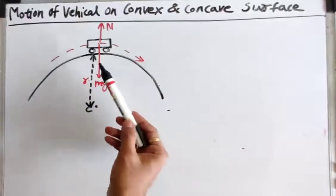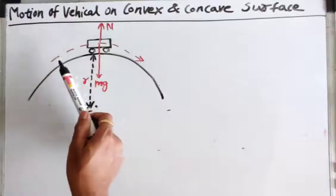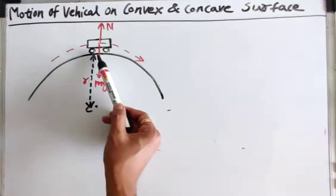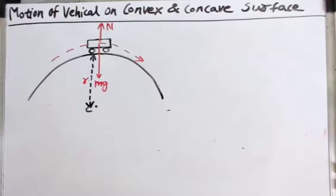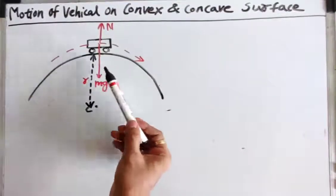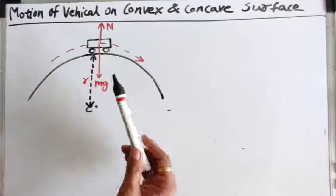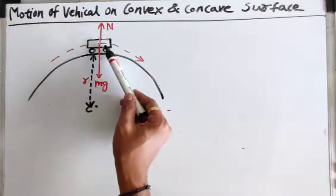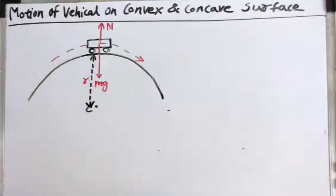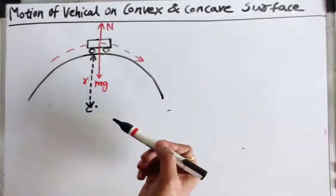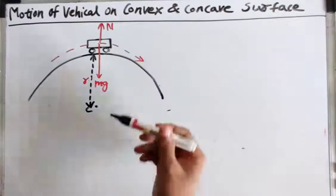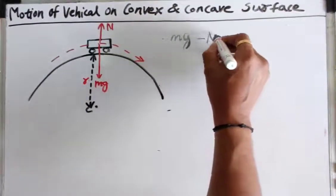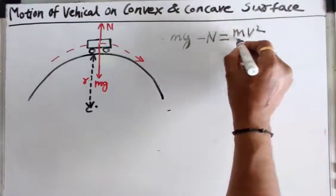Here you can see we have considered a vehicle of mass m moving with speed v over a convex overbridge. As shown in this figure, the vehicle is at the top of this convex overbridge of radius r. The forces acting on the vehicle at this topmost position are: its weight mg acting vertically downward, and the normal reaction between the vehicle and the road surface, which is in the upward direction. The resultant of these two forces gives the necessary centripetal force acting in the downward direction. Therefore, we can write mg minus n is equal to mv² upon r.